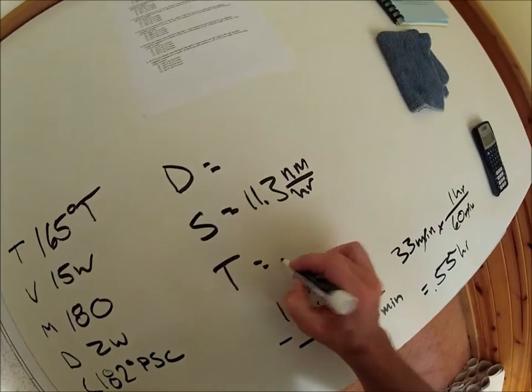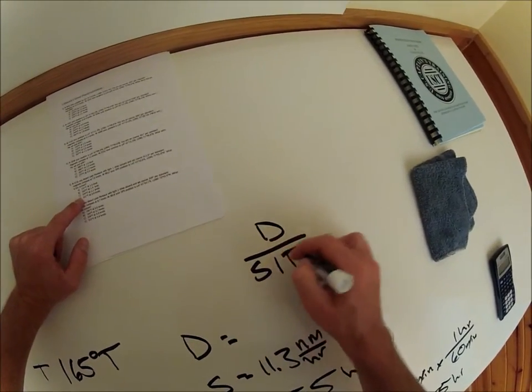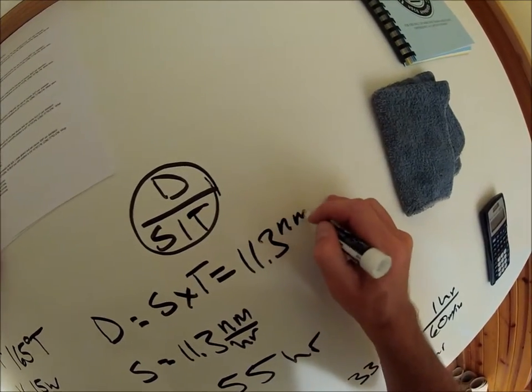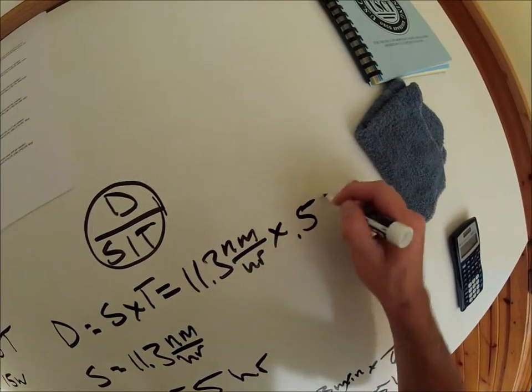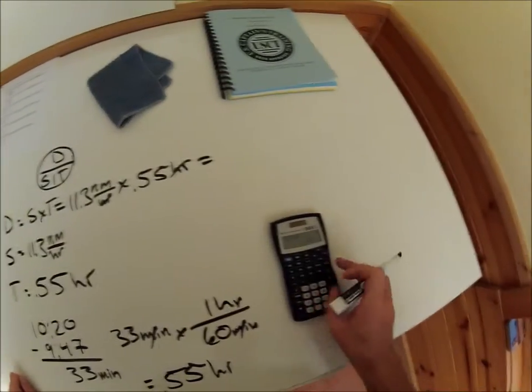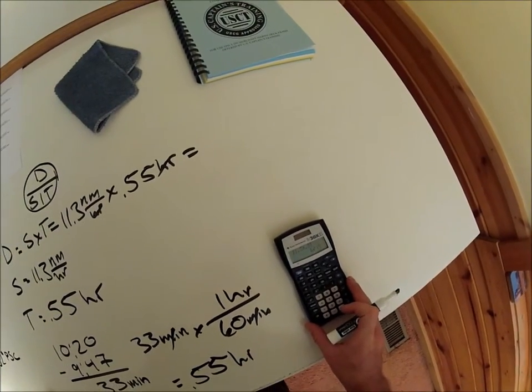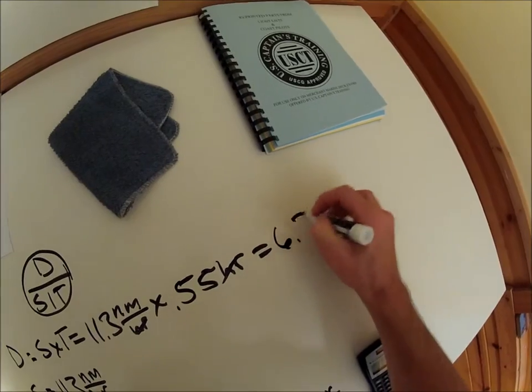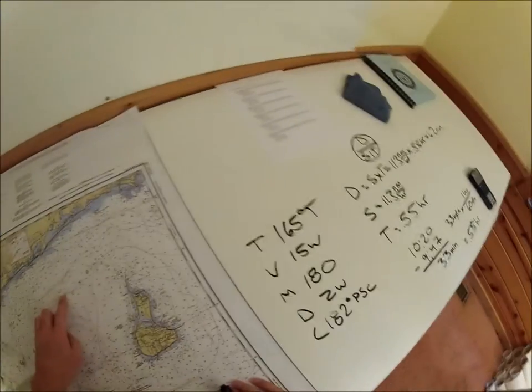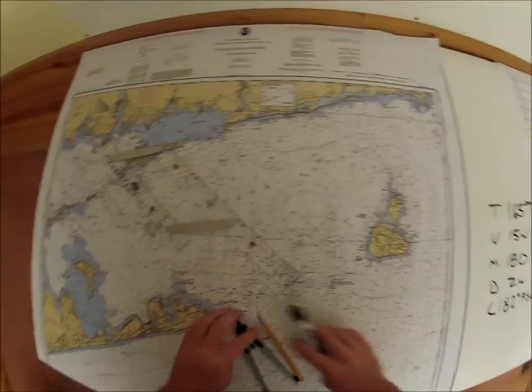So now we have a time of 0.55 hours. Distance equals speed times time. Our speed: 11.3 nautical miles per hour times 0.55 hours gives us what? 11.3 times 0.55 equals 6.215, so 6.22, 6.2 is what I'm going to call it nautical miles. That's how far we should have traveled if we were going 11.3 knots for 0.55 hours.